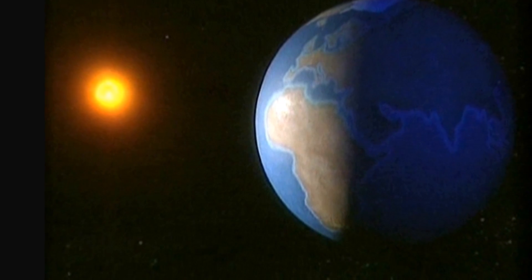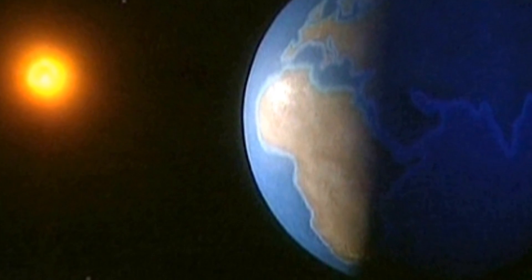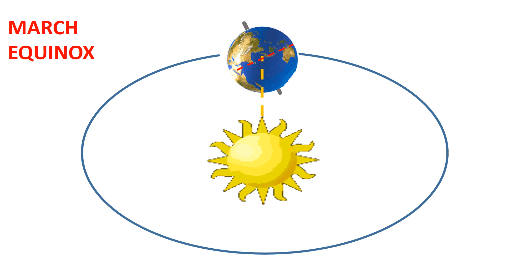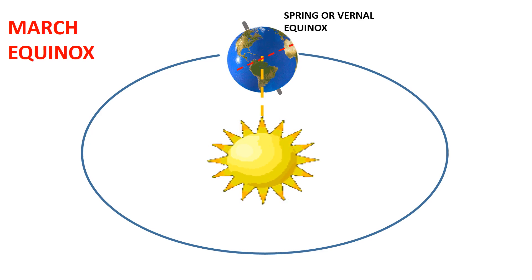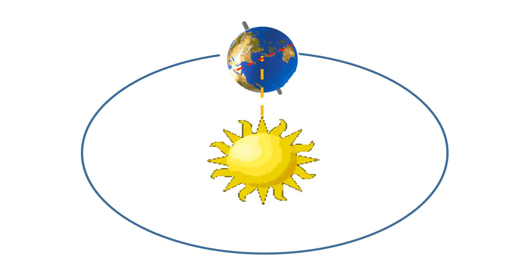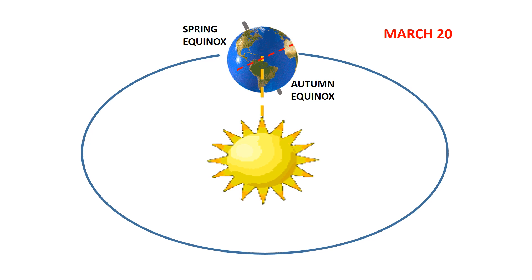There are two equinoxes every year, in September and March, when the sun shines directly on the equator and the length of day and night is nearly equal. The March equinox is the spring or vernal equinox in the northern hemisphere, marking the start of spring. In the southern hemisphere it is the autumnal or fall equinox, marking the beginning of fall. This happens on March 20th every year.